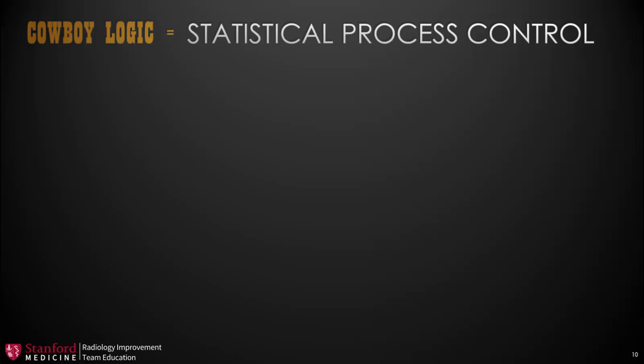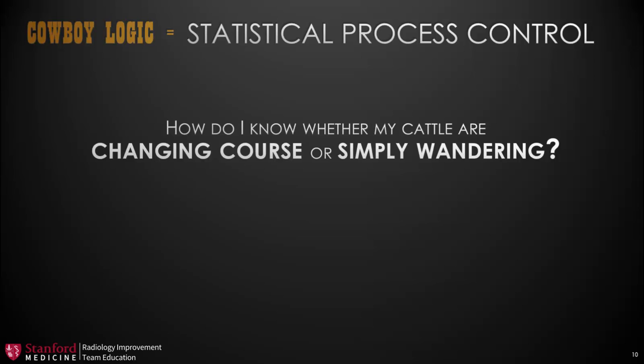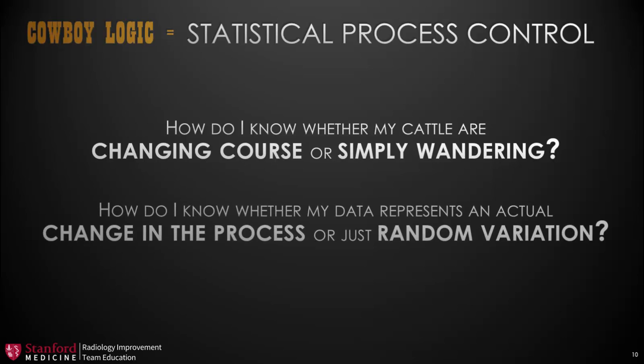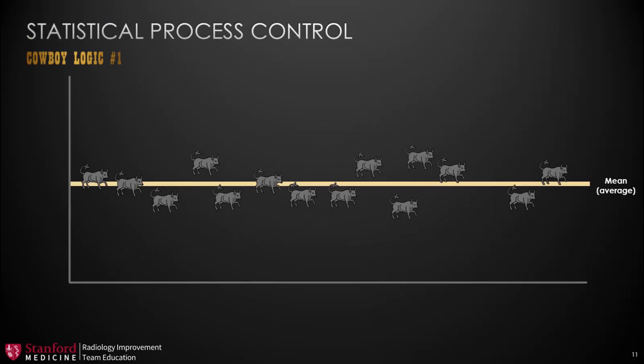So how does cowboy logic equate to statistical process control? When we were talking about the cattle drive, we asked: how do I know whether my cattle are changing course or simply wandering? In statistical process control, we're asking the question: how do I know whether my data represents an actual change in the process or just random variation?